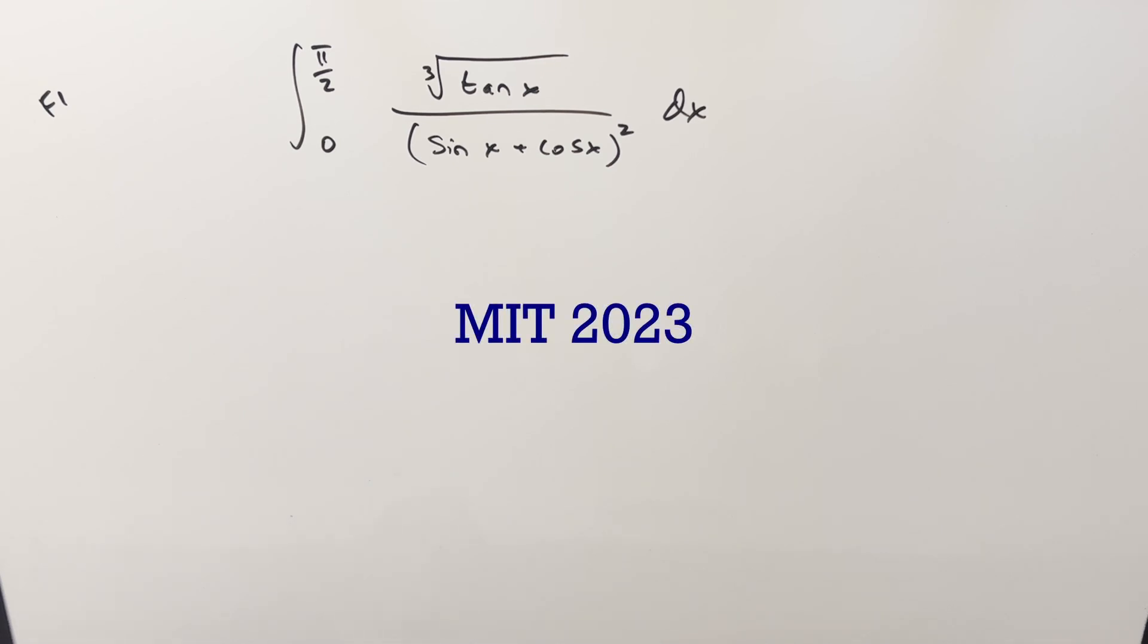Okay, we have an interesting integral. This one's from MIT 2023, finals number one. We have the integral from zero to pi over two, cube root of tan x over sine x plus cos x all squared dx.